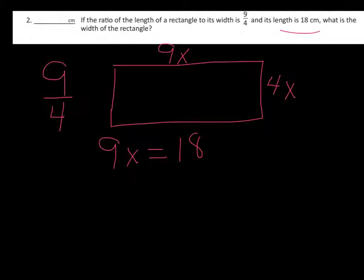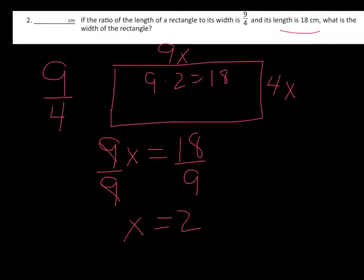So we solve for x by dividing both sides by nine, and that's going to cancel this out and leave you just with x equals two. So nine times two equals 18. Then we come over here to solve for our width, we would go four times two, put that in place of x, equals eight. Our answer again is in centimeters, so it's eight centimeters.